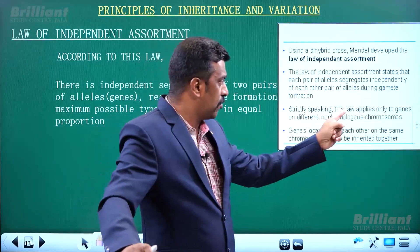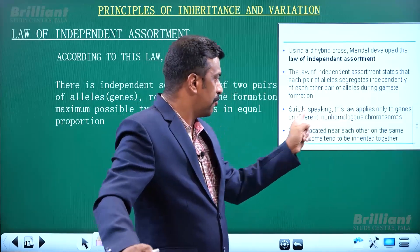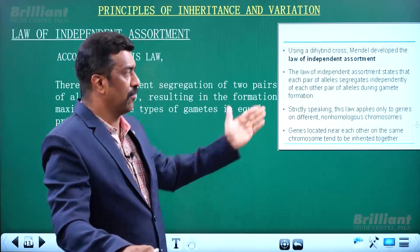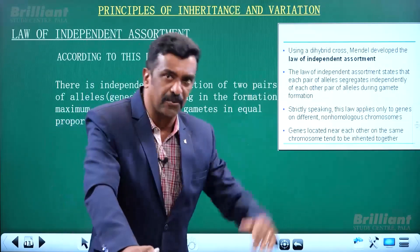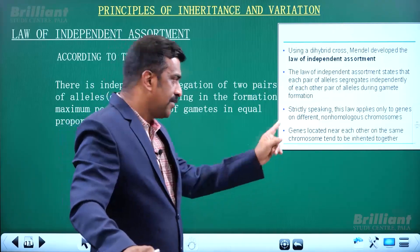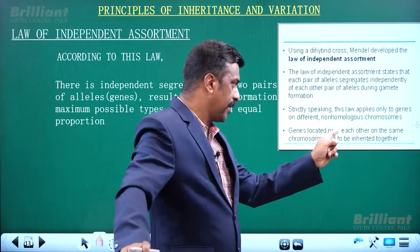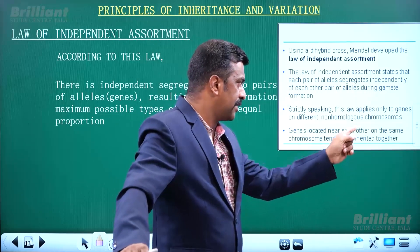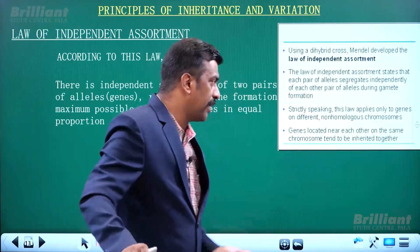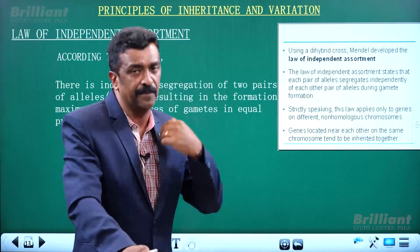Strictly speaking, this law applies only to genes on different non-homologous chromosomes. Genes located near each other on the same chromosome tend to be inherited together.